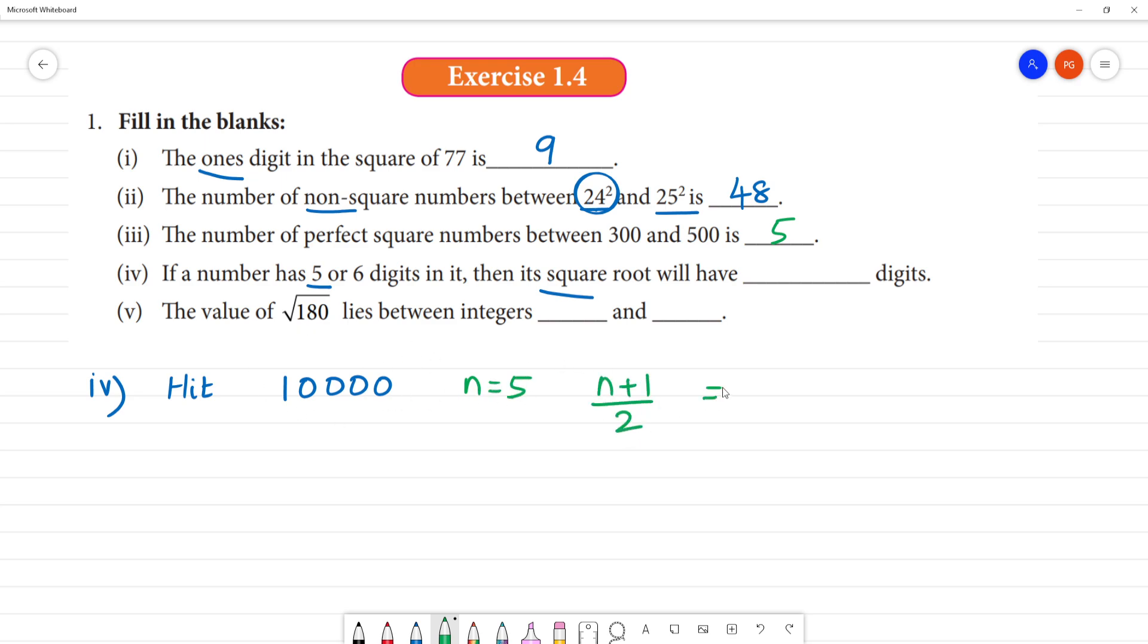For odd number of digits, use n plus 1 by 2. What is 5 plus 1 by 2? That equals 3. So for 5 digits, the answer is 3 digits. Now for 6 digits, that's an even number. For even number, use n by 2. So 6 by 2 equals 3.